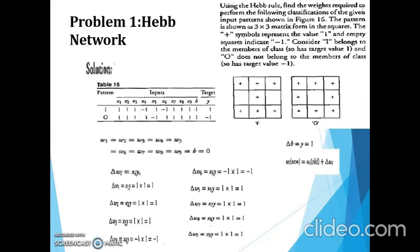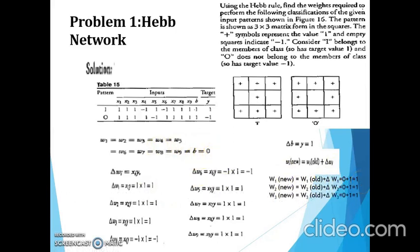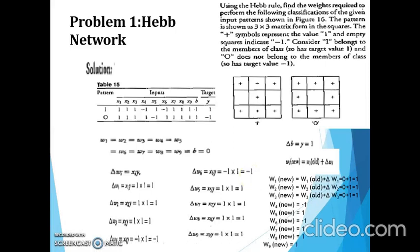To update the weight: w1_new = w1_old + x·y. xi·y is represented by delta_wi, so w1_new = w1_old + delta_w1. Delta_w1 is 1, w1_old was initialized to 0, so the value will be 1. w2 is also 1, w3 is also 1. But for w4, delta_w4 is -1 and w4_old is 0, so the value will be -1. w5 is 1. For w6, the change of weight is -1, so 0 + (-1) = -1. w7 is 1, w8 is 1, w9 is also 1.